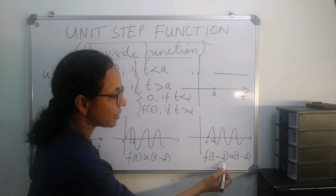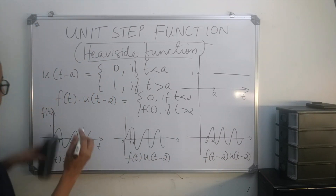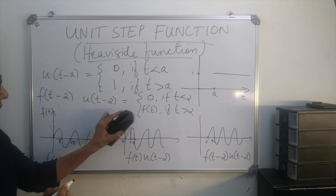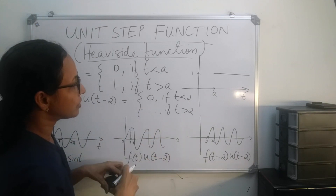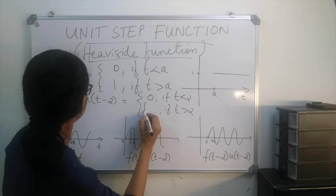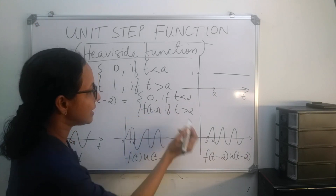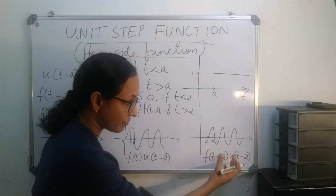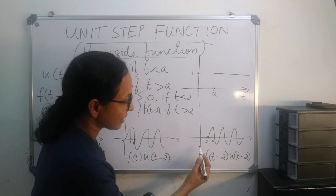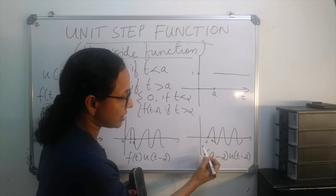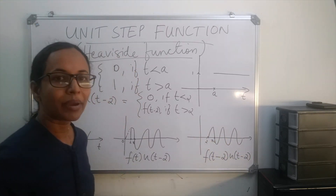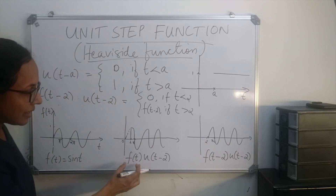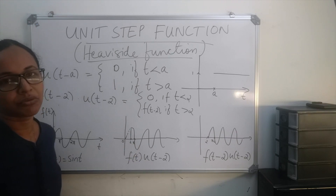Another property involves f(t − 2)·u(t − 2). We can write this as 0 if t < 2. The effect of the unit step function here is shifting the function f(t) to the right-hand side by 2 units. So this is a shifting function, whereas the previous one was for switching on and switching off a function.